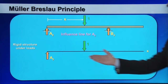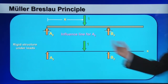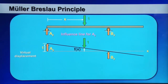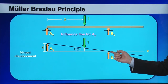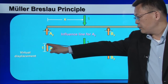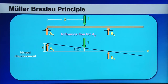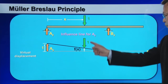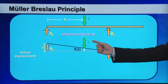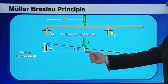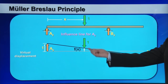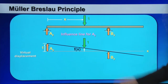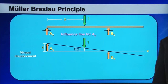Imagine this is a rigid body. I disturb the structure by moving point A upward by one unit while holding point B stationary. As a result, Ay does work equal to Ay times one. This downward unit force also contributes to virtual work, equal to one times the magnitude at that location, described by the function Fx. Since this function is positive upward and the unit force acts downward, they contribute negative work.